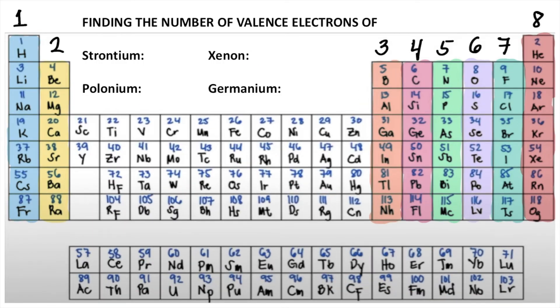Now let's move on to more examples. What if you are asked how many valence electrons are there in strontium? Strontium is Sr. So this is Sr. It's under column 2, so it has 2 valence electrons.